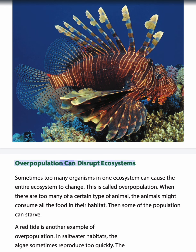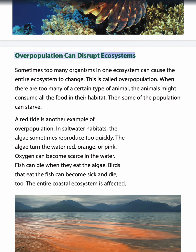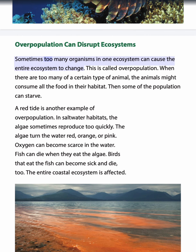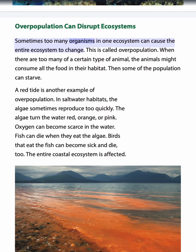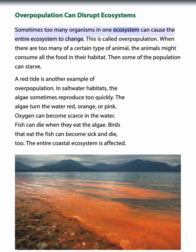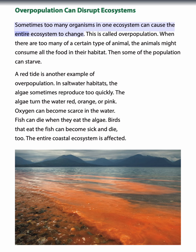Overpopulation can disrupt ecosystems. Sometimes too many organisms in one ecosystem can cause the entire ecosystem to change — this is called overpopulation. When there are too many of a certain type of animal, the animals might consume all the food in their habitat, and then some of the population can starve.